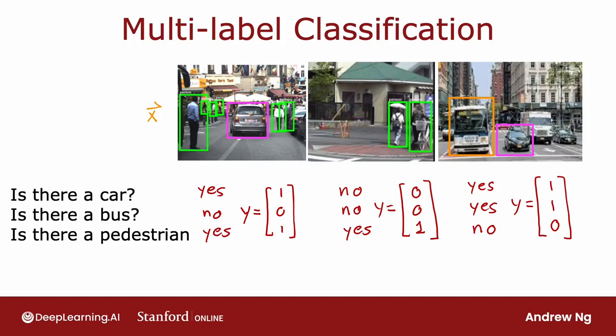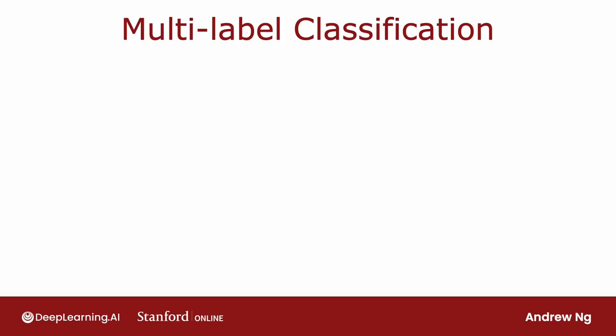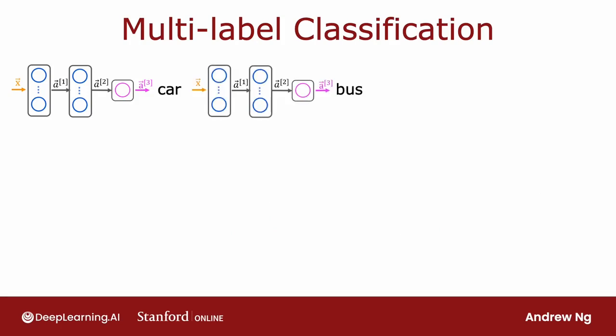One way to go about it is to treat this as three completely separate machine learning problems. You could build one neural network to decide if there are any cars, the second one to detect buses, and the third one to detect pedestrians. And that's actually not an unreasonable approach. Here's the first neural network to detect cars, second one to detect buses, third one to detect pedestrians.